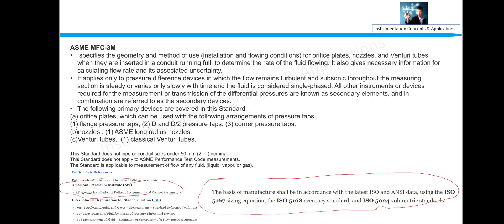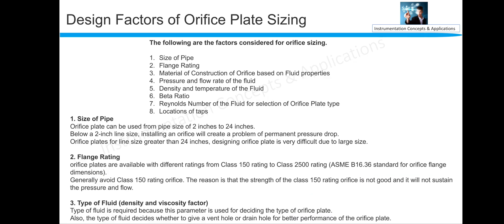And the rest are the ISO standards like 5024, 5167, and 5168. So these three are the main standards which are being followed. Coming to the next slide, design factors of orifice plate sizing. There are eight number of factors. First is the size of the pipe. Orifice plate can be used from pipe size of 2 inch to 24 inch.